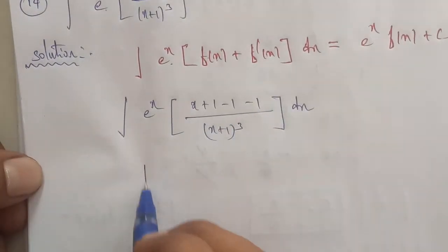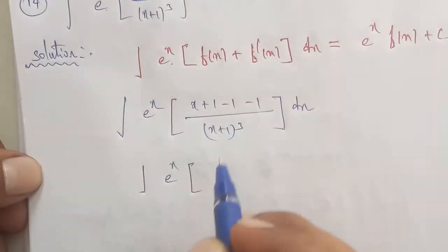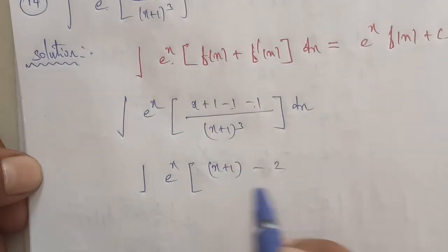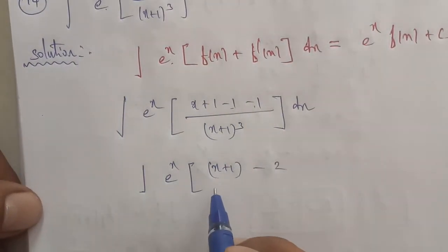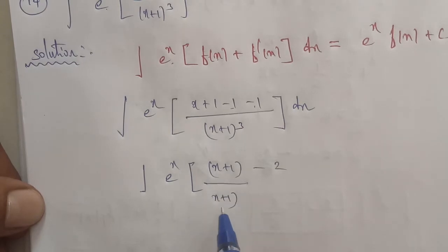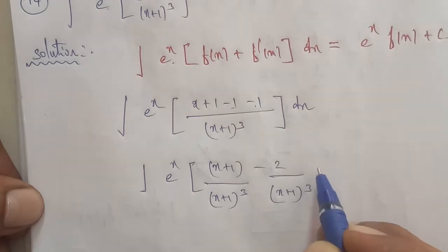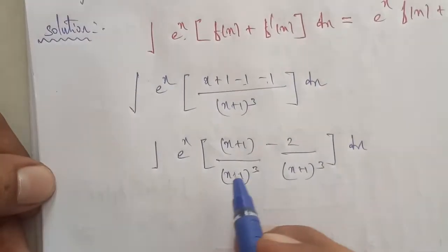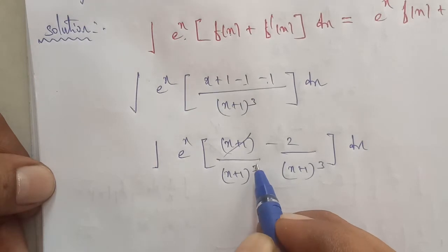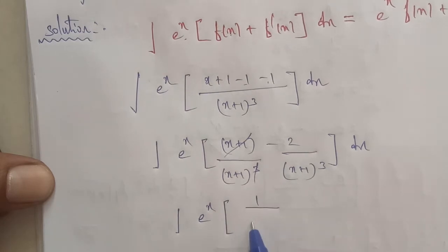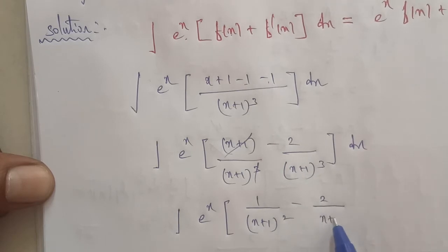Next, in the integration of e power of x, the term x plus 1 minus 2, divided by x plus 1 the whole power of cube, that is by x plus 1 the whole power of cube into dx. Cancelling x plus 1, the remaining part is e power of x times 1 by x plus 1 square minus 2 by x plus 1 cube dx.